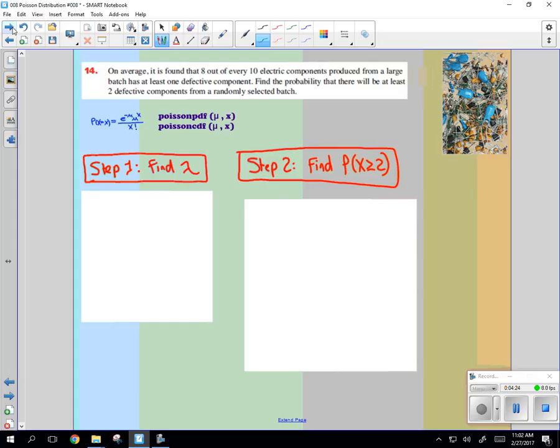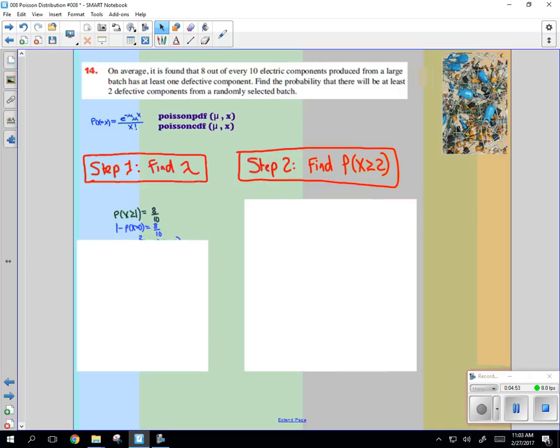Number 14. On average, it's found that 8 out of 10 electric companies produce from a large batch has at least one defective component. Find the probability that there will be at least two defective components from a randomly selected batch. So, we need to find lambda first. So, it says the probability that x is greater than or equal to 1 is 8 tenths.